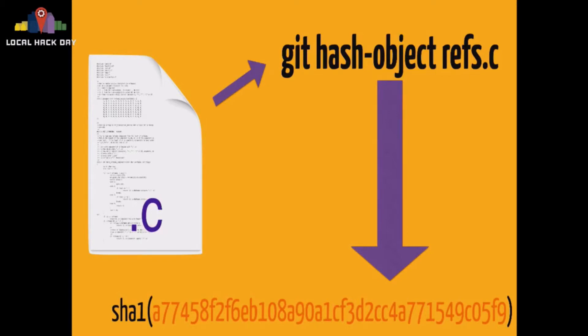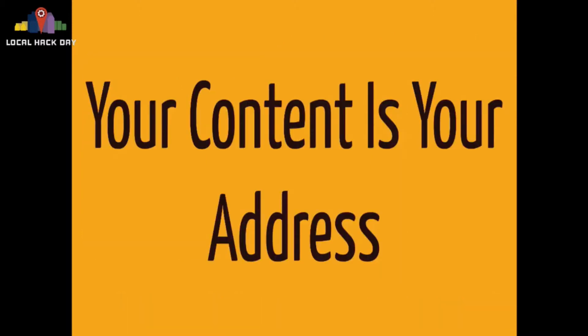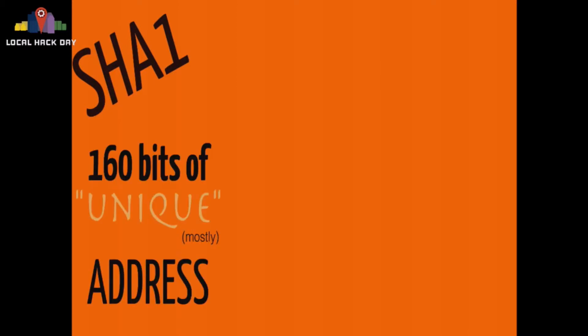Here I have this C file, refs.c, which is part of the Git source tree. If you go git hash-object refs.c, I get this SHA1. What is a SHA1? A SHA1 is a hash, and a hash is essentially your address. The content that you have becomes the address by which you look up your content — it seems circular, doesn't it? A SHA1 is 160 bits of unique address space. I say unique because it's mostly unique — you can generate collisions purposefully if you'd like, but the chances of a collision happening in real life are very, very slim.